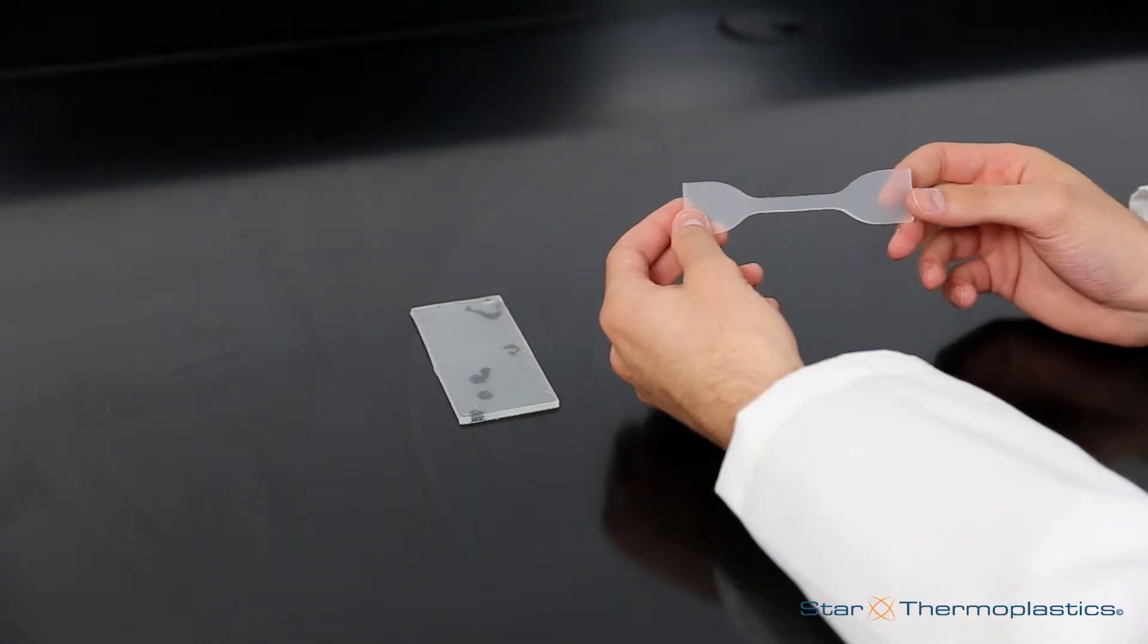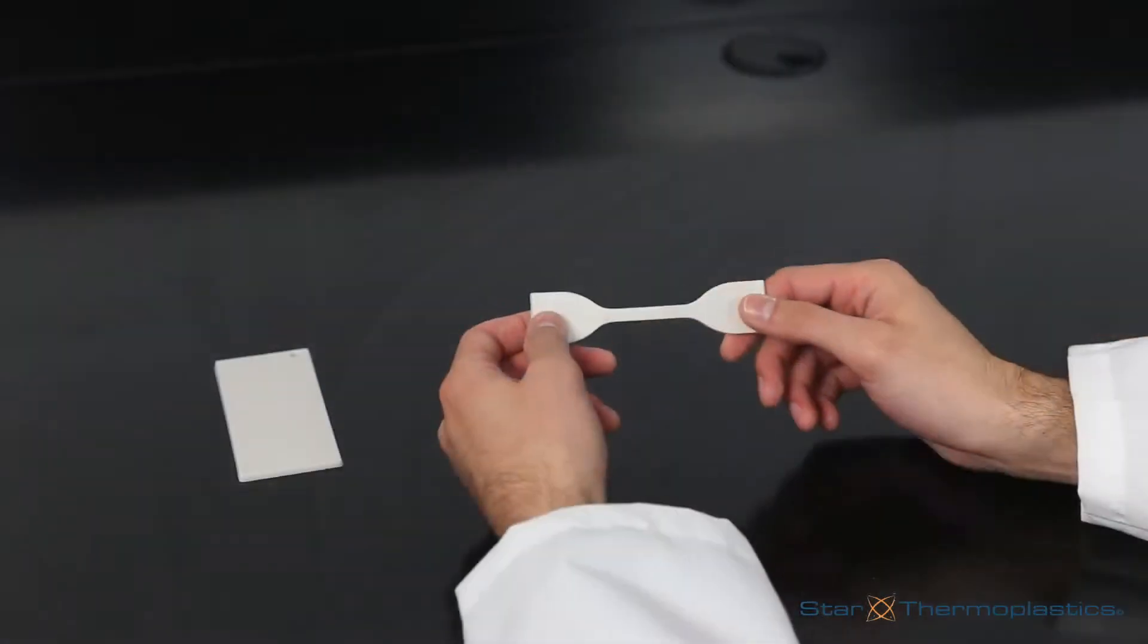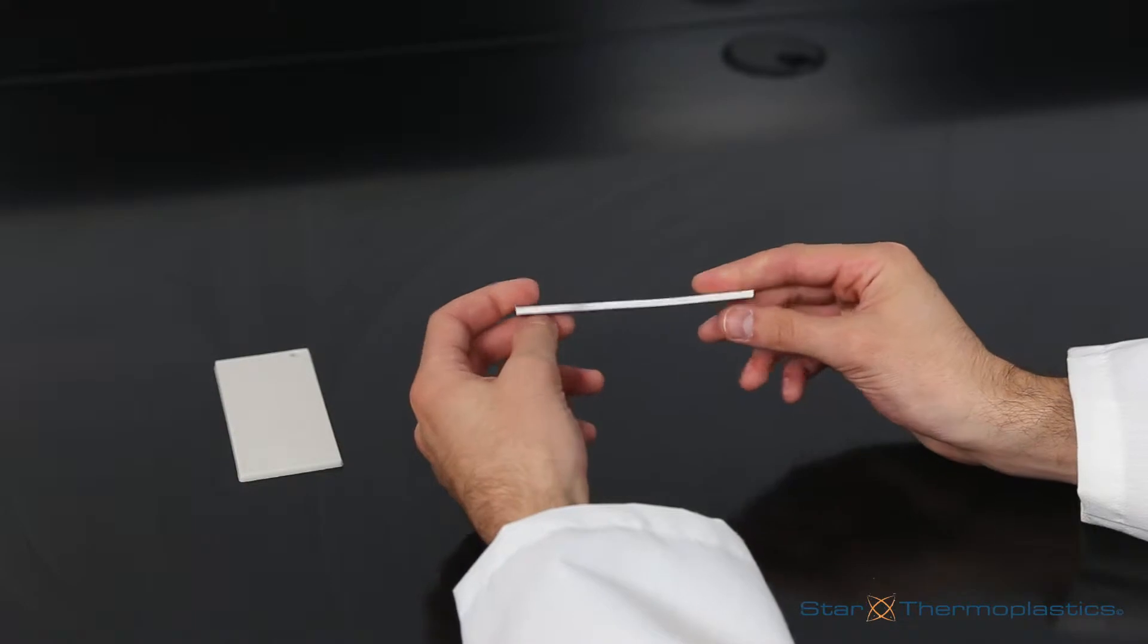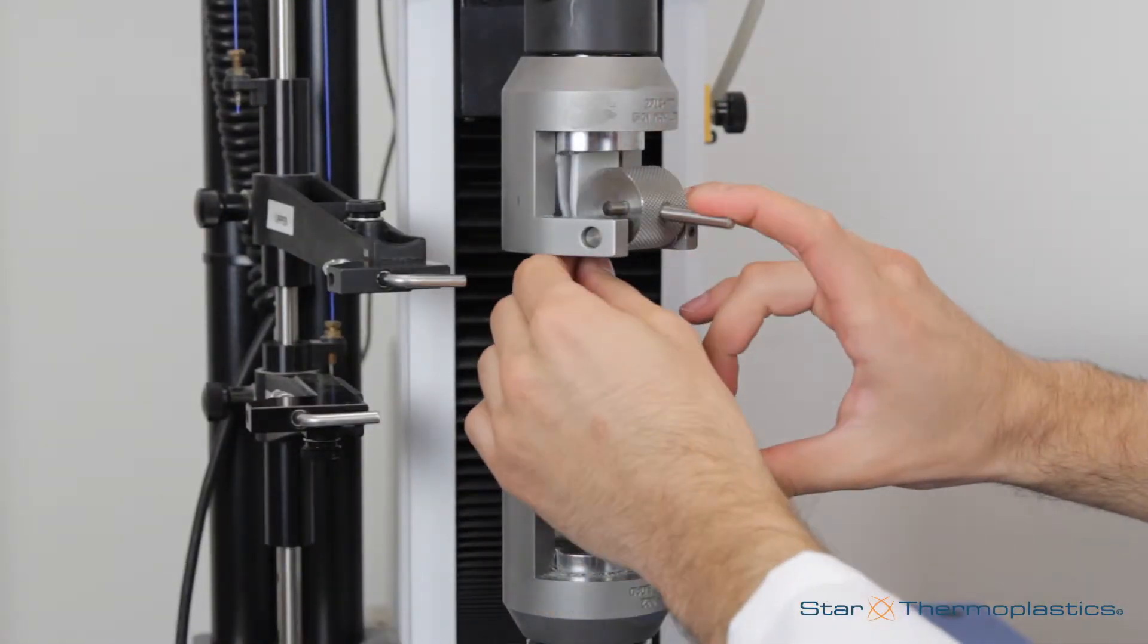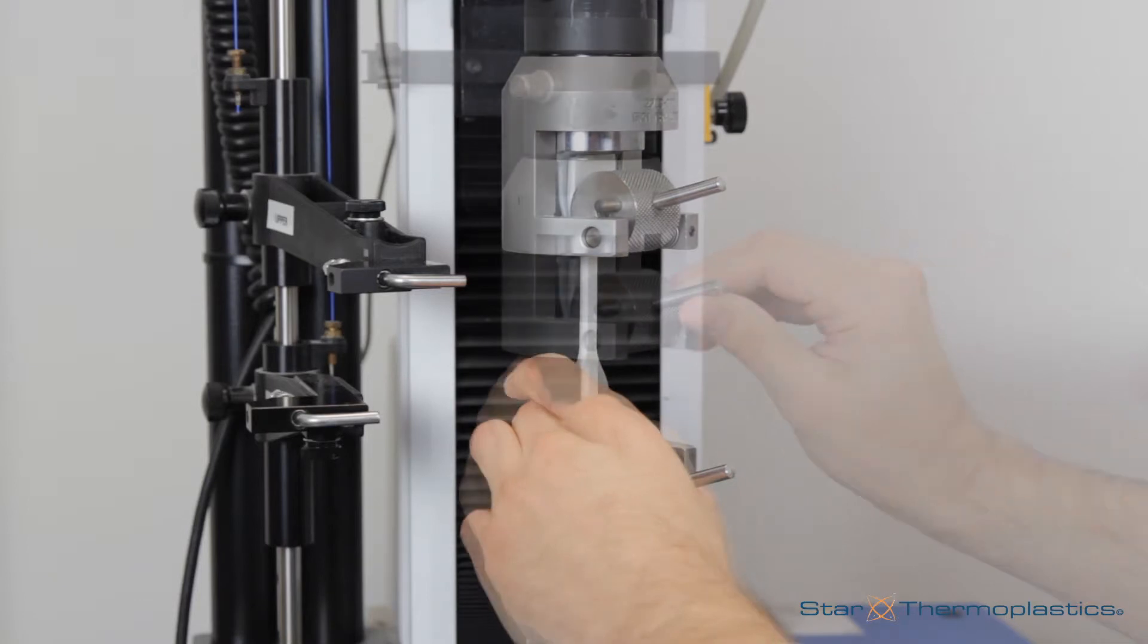You will also need a test strip that has been cut into the test shape. For our purpose, we cut them into a dumbbell shape. The test material is secured in place with grippers, and then we initiate the test.